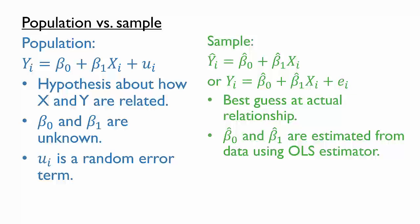The hats on the β̂₀ and β̂₁ in our sample relationship indicate that they are our best guesses, or estimates, of the population parameter. We can also calculate the residuals eᵢ as the difference between the actual y values and the predictions.